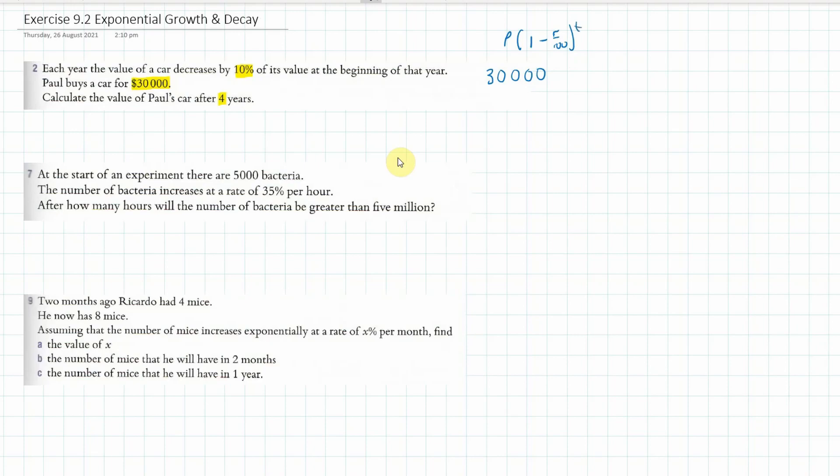So in this case that's going to look like 30,000 times 1 minus 10 over 100 all to the power of four years.